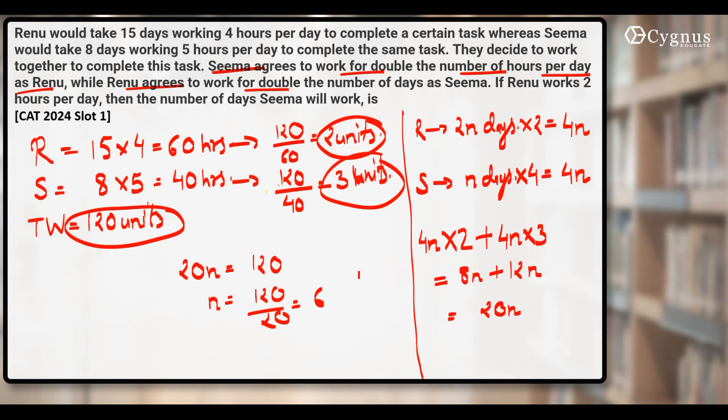What was n here? We assumed that Seema will work for n days. So the number of working days of Seema will become 6, while Renu's will become double of that, 12. So the correct answer, number of days Seema will work, is 6.